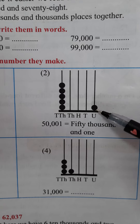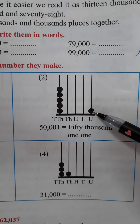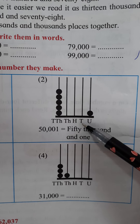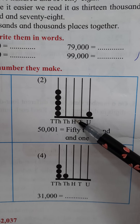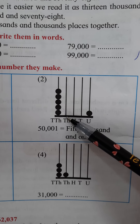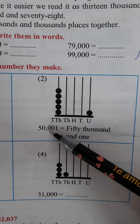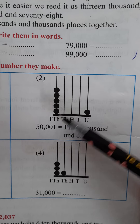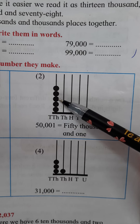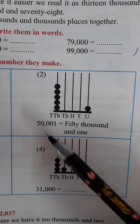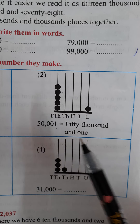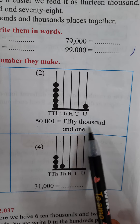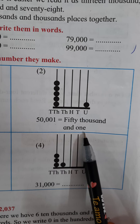Now see the next one. On the unit place only 1 symbol is there, so we write 1. On the tens place there is no symbol, on the hundreds place also no symbol, and on the thousands place also no symbol — so we write 0, 0, and 0. On the 10,000 place there are 5 symbols: 1, 2, 3, 4 and 5 — so we write 5. We read this number as 50,001.